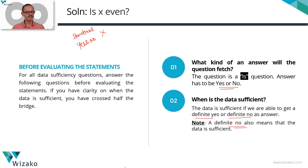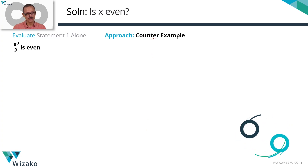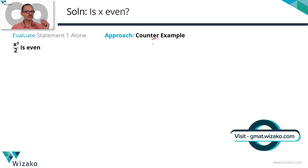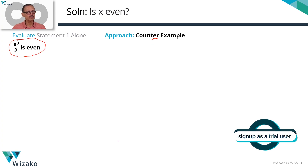So we have clarity on when the data is sufficient. The question is: is X even? Let's venture into statement one. Statement one tells us that X cubed divided by 2 is even. The approach I'm going to take is a counter-example approach. Counter-examples are actually very quick to get to the answer if a counter-example exists. You pick two examples, both of which must keep X cubed divided by 2 even.